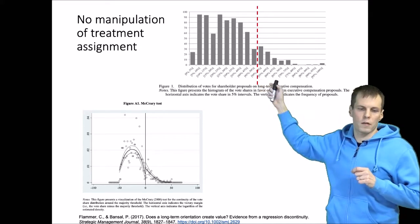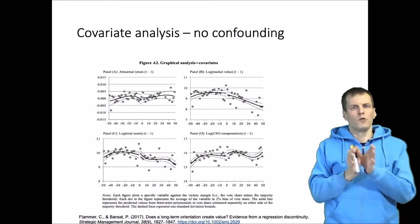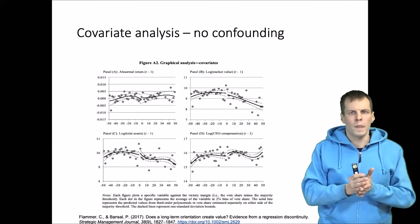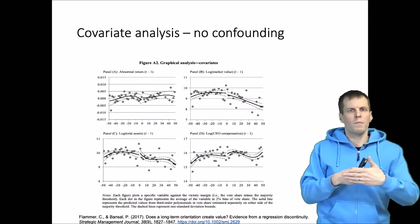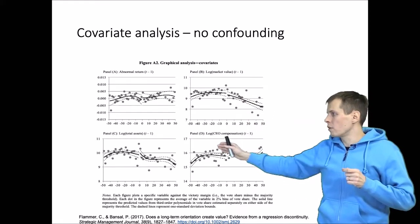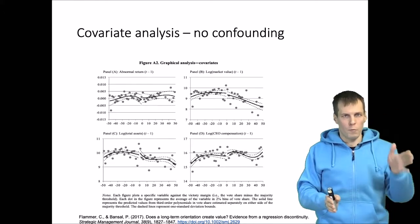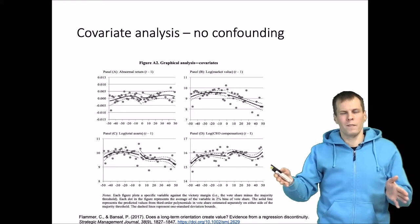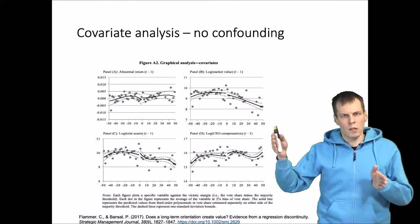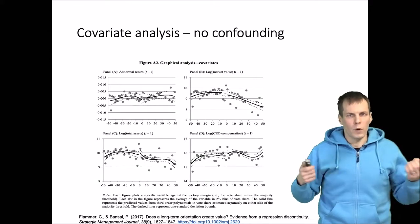Another important assumption is that there's no confounding — no variables in the model should depend on the treatment assignment. Flammer studies all variables measured right before the treatment and shows there is no effect of the treatment on variables that are not supposed to be affected. If the vote is today, we study values of control variables from yesterday; the vote cannot have a causal effect on the past. But if analysis shows a difference between treatment and control before the vote, that indicates a potential confounding factor not considered in the analysis.